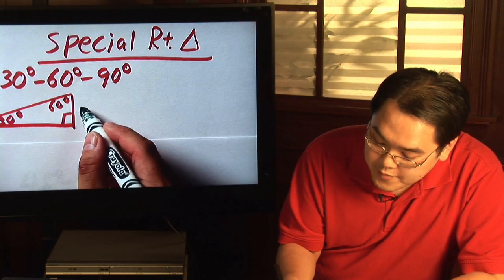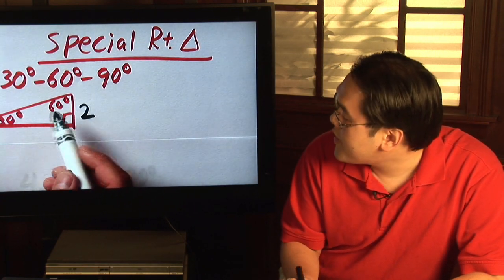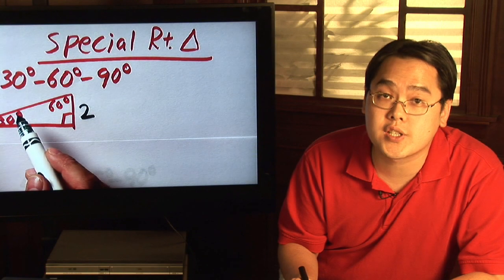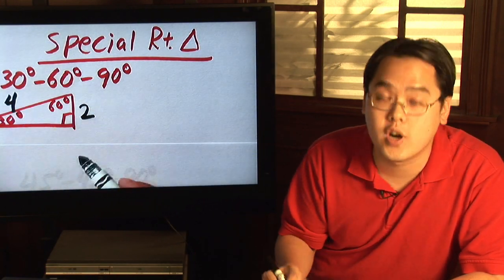For example, if the side facing the 30 degree angle is two, then the hypotenuse in this 30-60-90 triangle is going to be twice as long. In other words, it's going to be four units.